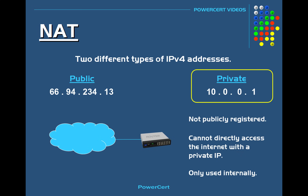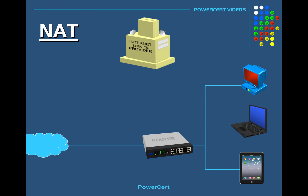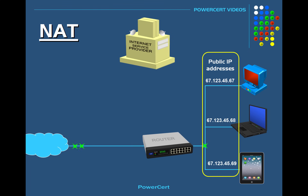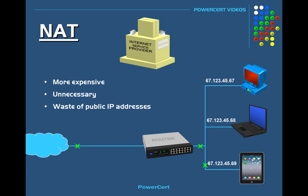Your router is what assigns your internal devices a private IP. Most homes and businesses are not going to have just one device that needs internet access — chances are they will have multiple devices that need access to the internet, so those devices need a public IP address. You could contact your internet service provider and ask for additional public IP addresses for all of your devices, but that's going to be more expensive, unnecessary, and a waste of public IP addresses. If every device in the world had their own public IP address, we would have run out already.